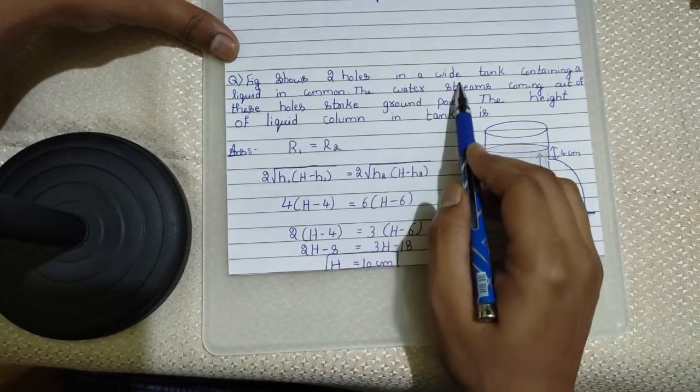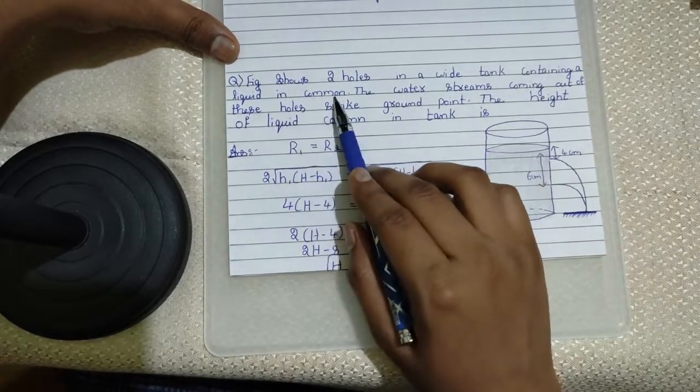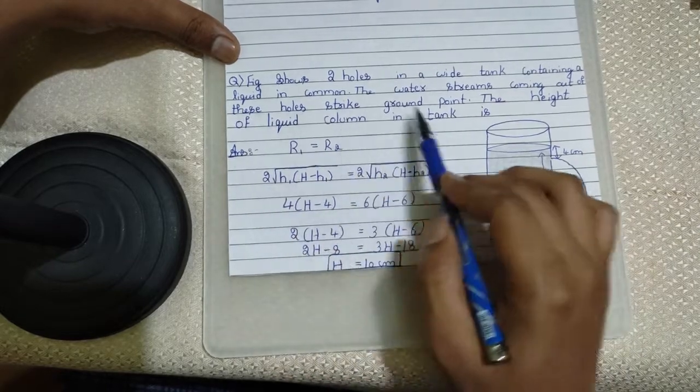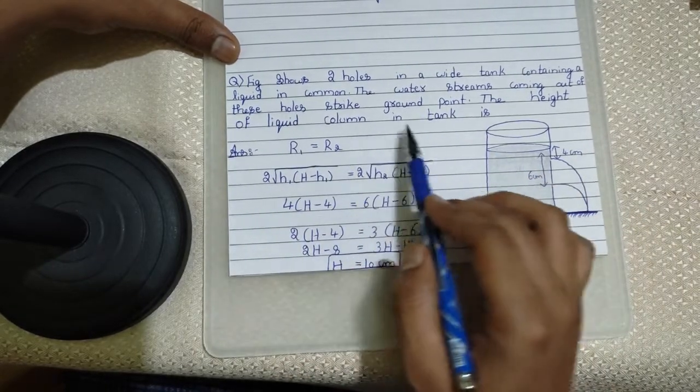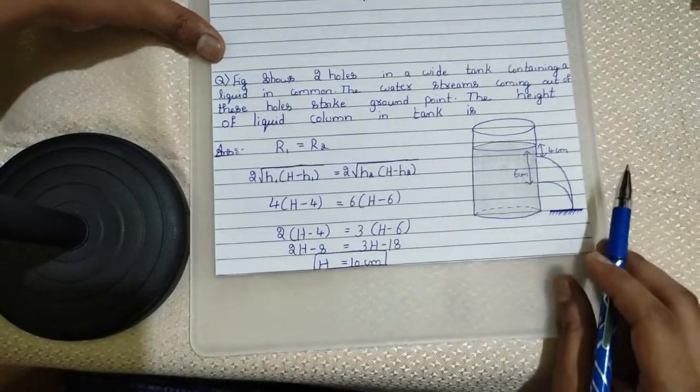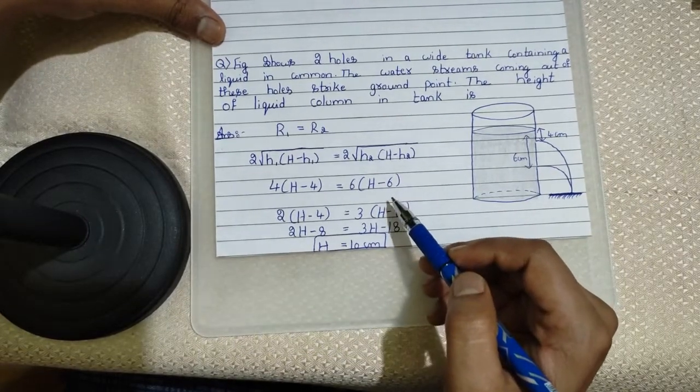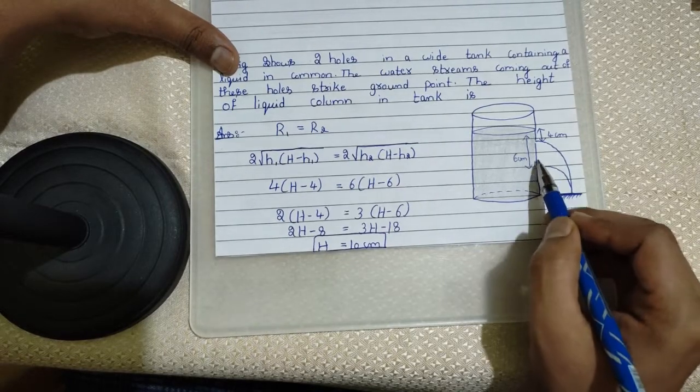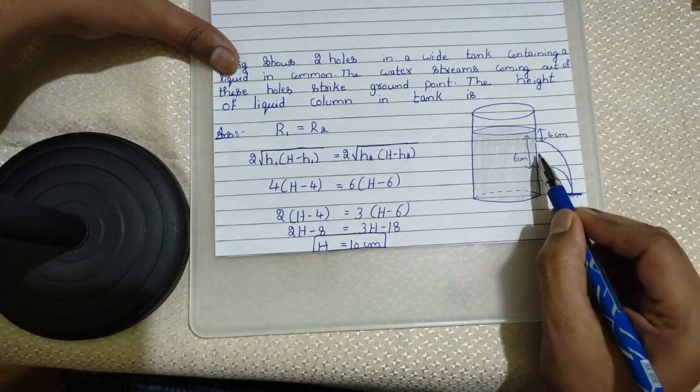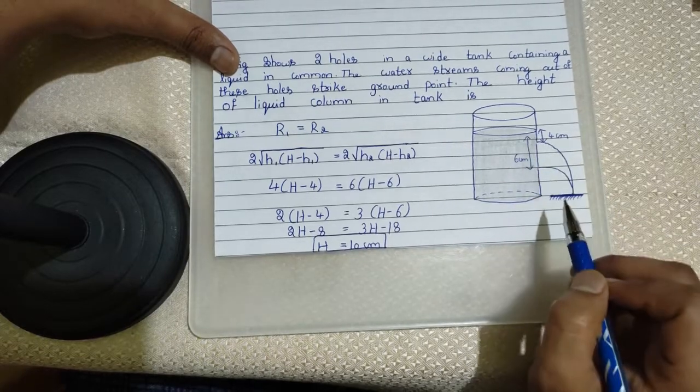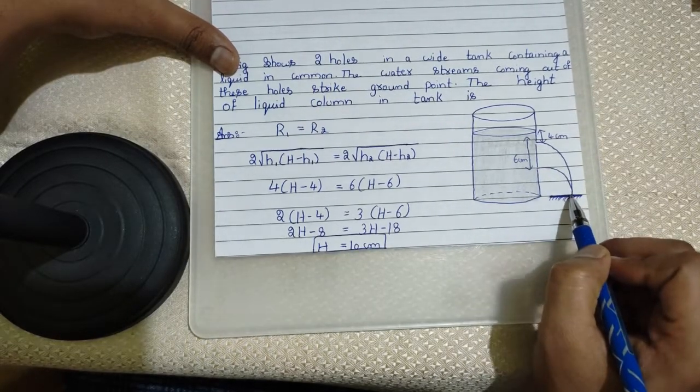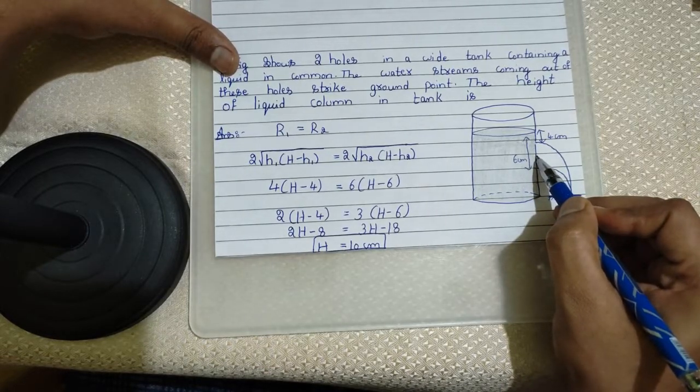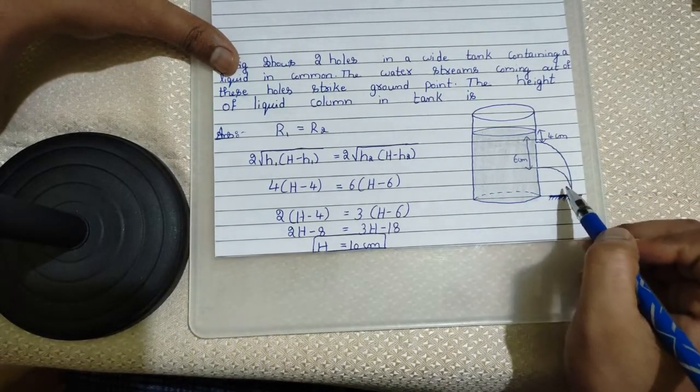Figure shows two holes in a white tank containing a liquid in common. The water streams coming out of these holes strike ground. The height of the liquid column in the tank. I have just solved this question in a regular manner. Now, remember one thing. Whenever there will be hole in the tank, whenever we will be having this type of setup, just remember the range will be same. Let the hole be here. Let the hole be there. It doesn't matter. The range will be same.